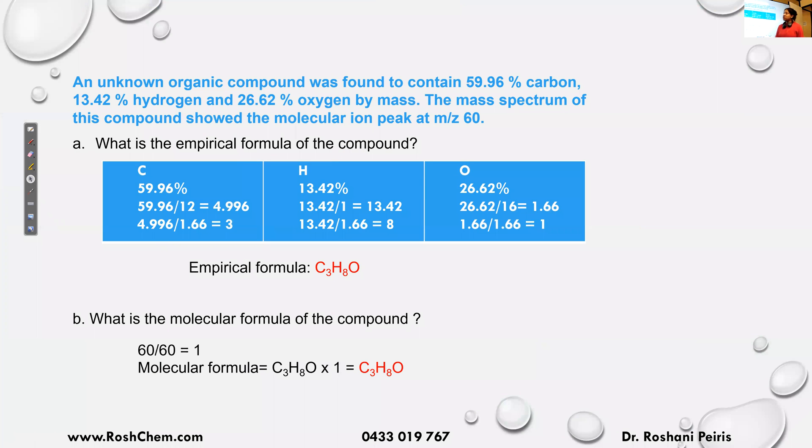We will look at this question. An unknown organic compound was found to contain 59.96% carbon, 13.42% hydrogen and 26.62% oxygen by mass. The mass spectrum of this compound showed the molecular ion peak at 60. Question number one, what is the empirical formula of the compound?